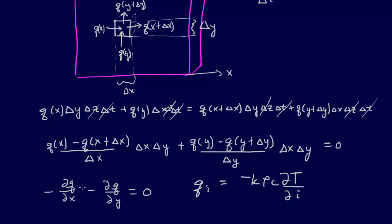That's here and here, so we're going to have a second partial of q with respect to x, and a second partial of, or not q, excuse me, it'll be a second partial of T with respect to x, and a second partial of T with respect to y.